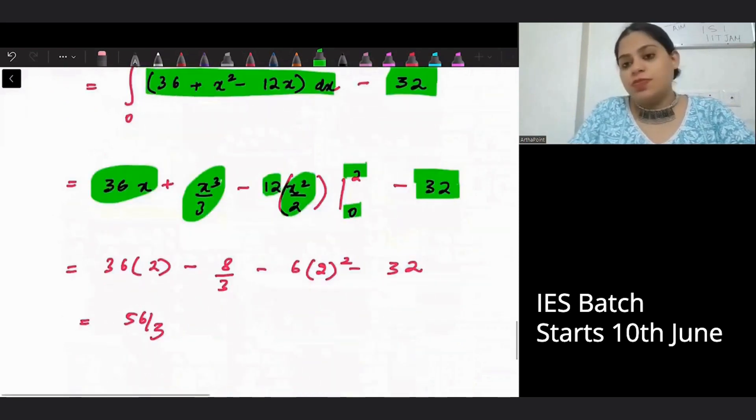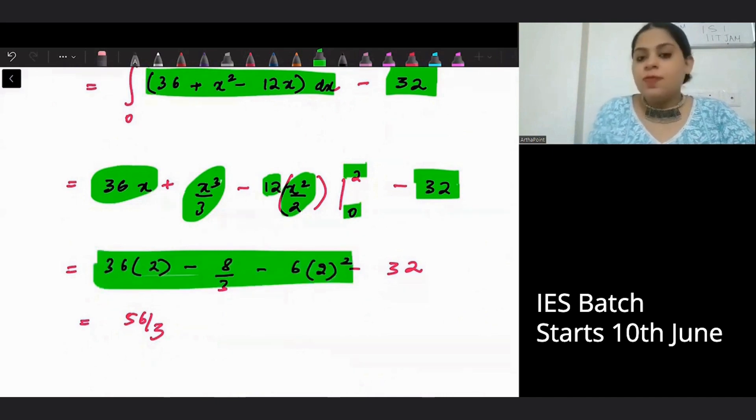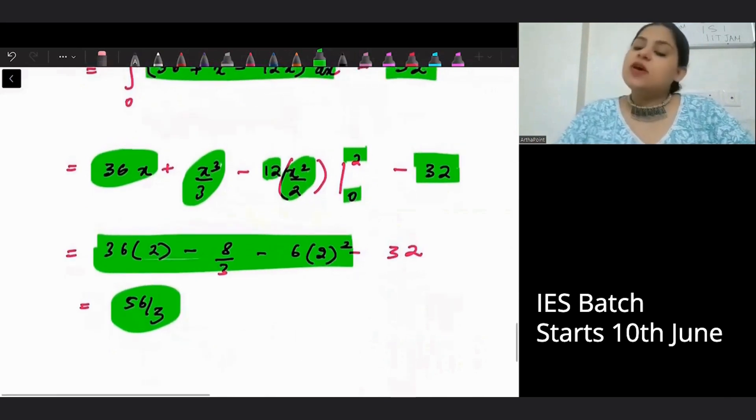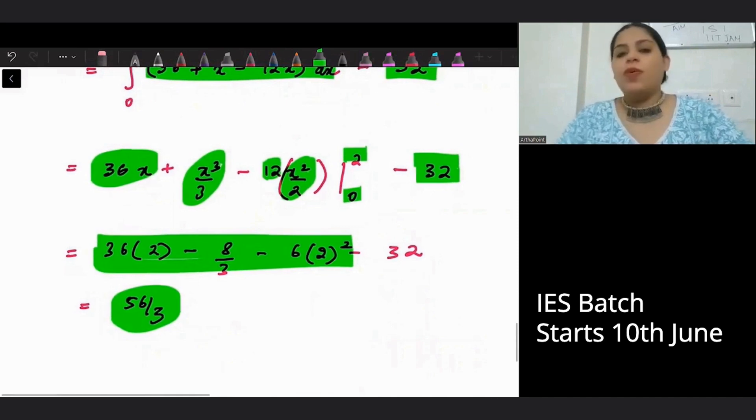Put x as 2. Minus put x as 0. So when you do this, this is simple integration. Leaving it up to you. You will get the answer as 56 by 3. So the consumer surplus in this case will be 56 by 3. That's the answer to your question.